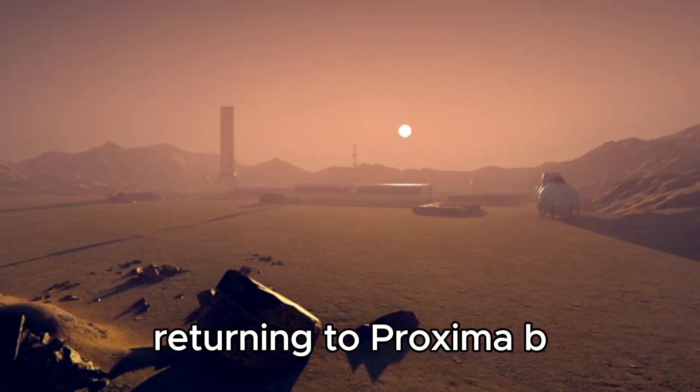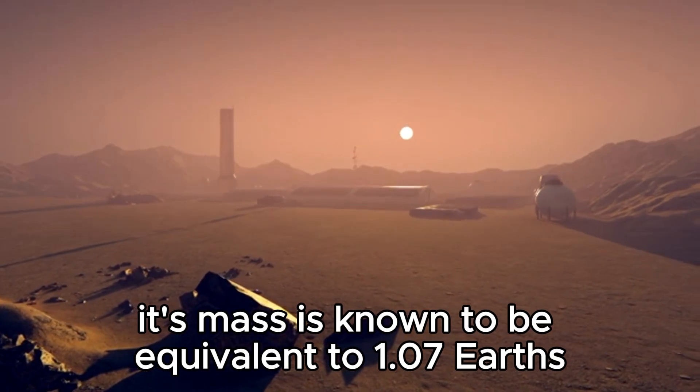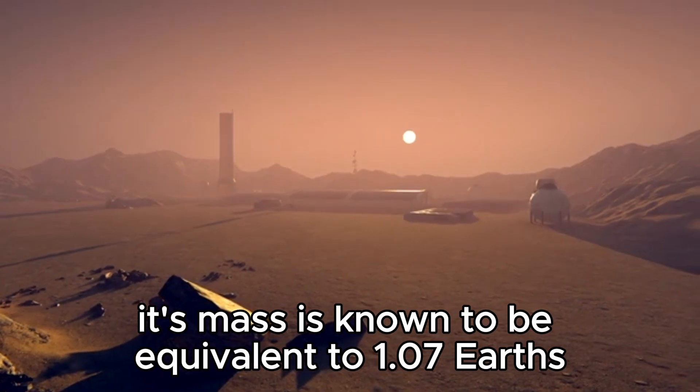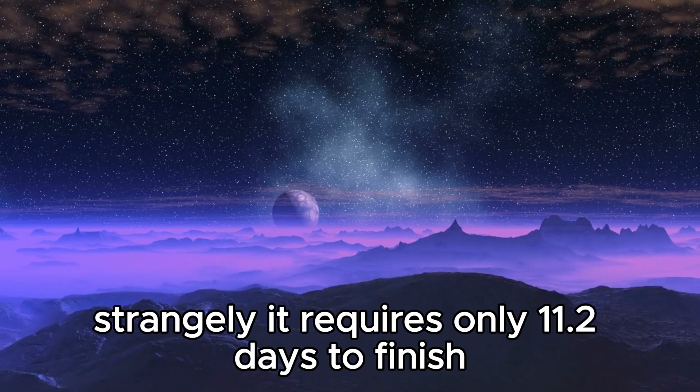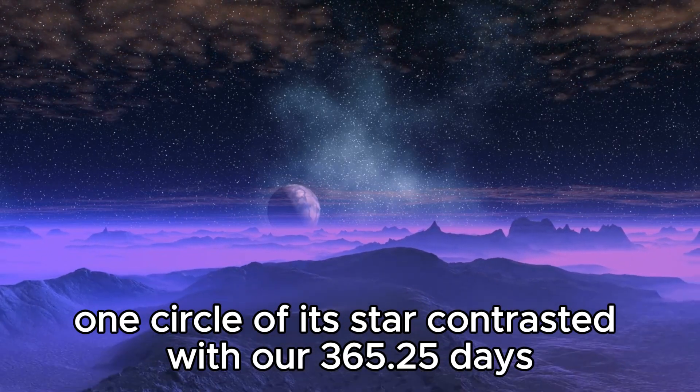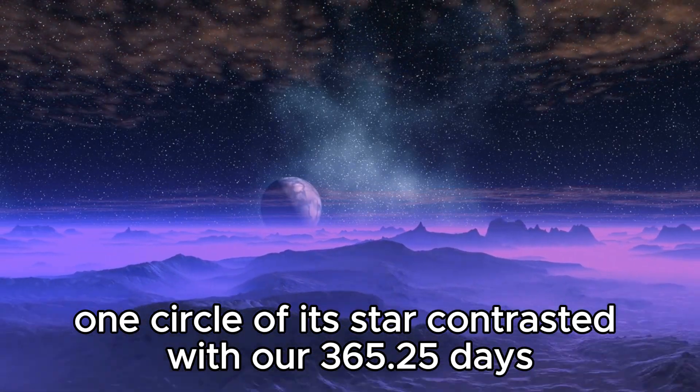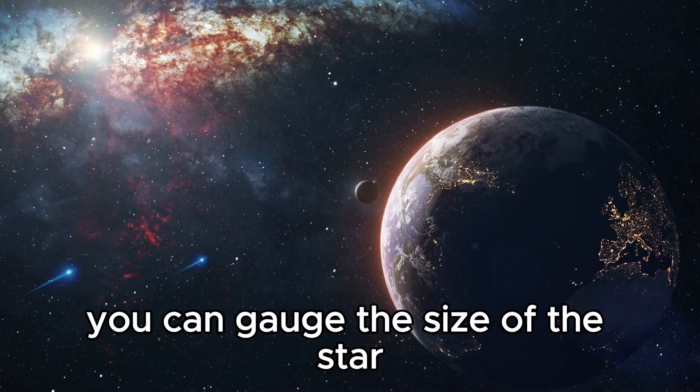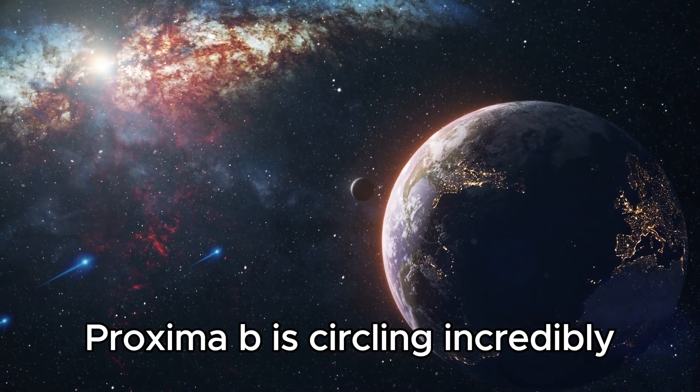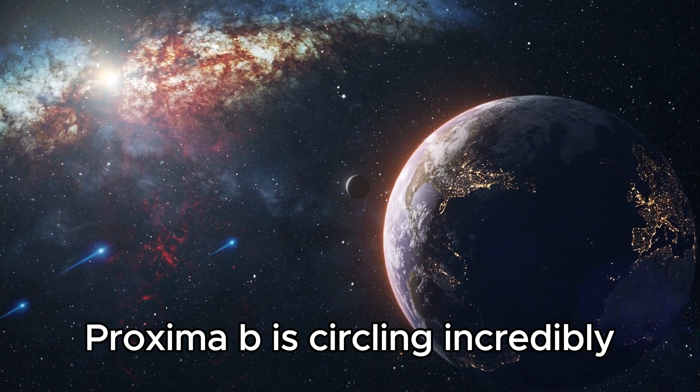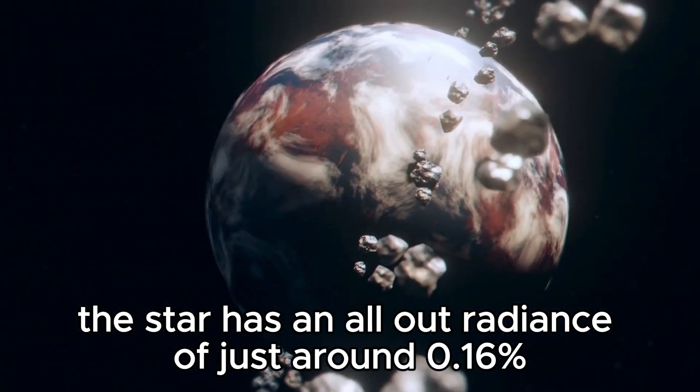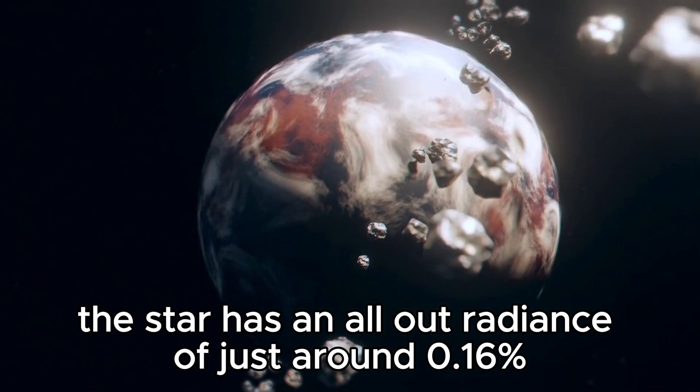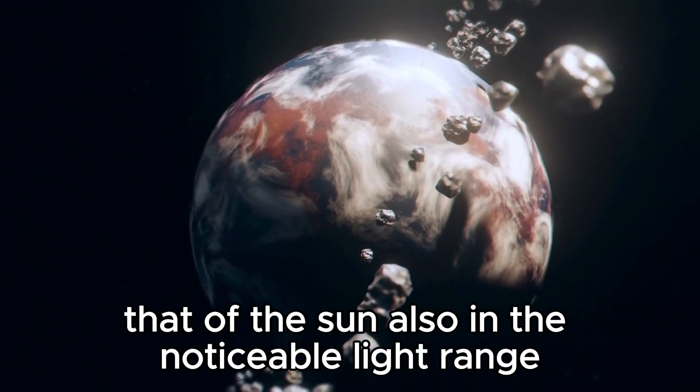hence getting their name and characteristics. Returning to Proxima B, its mass is known to be equal to 1.07 Earths. Interestingly, it requires only 11.2 days to complete one orbit of its star compared to our 365.25 days. You can estimate the size of the star Proxima B is orbiting. Incredibly under the estimation of the whole electromagnetic spectrum, the star has a total radiance of just around 0.16% that of the sun. Also,